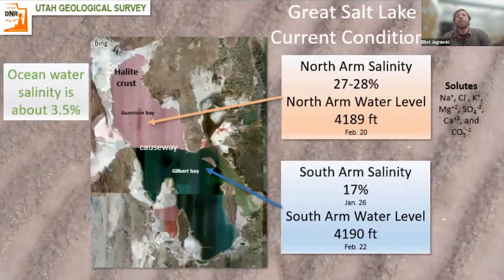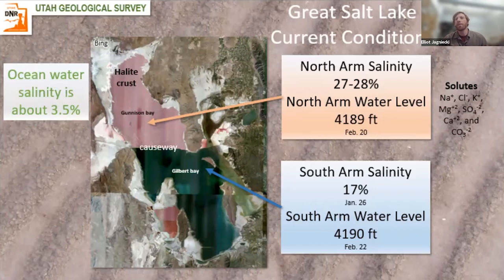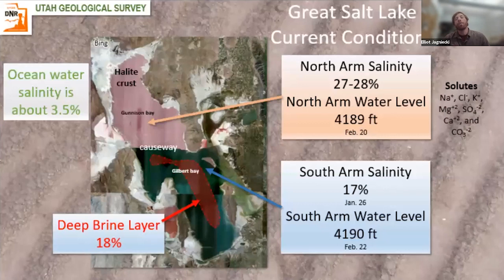The Union Pacific Causeway, built in 1959, really separated the lake into two arms: the north arm, Gunnison Bay, and the south arm, Gilbert Bay. Salinity in the north is mainly around 28%, currently at elevation 4,189 — about a foot lower than the south arm, which is on the verge of 17 to 18%. The south arm also has a reoccurrence of a deep brine layer at 18% salinity, which sometimes diffuses during mixing events, potentially raising salinity. Ocean water is 3.5%, so Great Salt Lake is at a much higher magnitude of salinity — though the chemistry is about the same, just more concentrated.